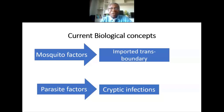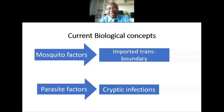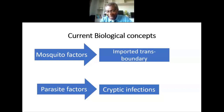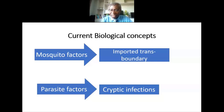Regarding the parasite factor: in P. vivax and P. ovale, some parasites that enter liver cells remain dormant and reactivate after a period — these are the hypnozoites. Beyond hypnozoites, current knowledge indicates the liver may not be the only site where parasites hide in a dormant state. Other sites outside the liver where infections occur are called cryptic infections.